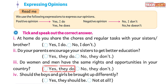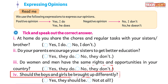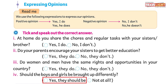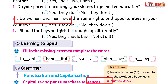The options for the third question are yes they do have and no they don't have — just choose the correct option. The last question: should girls and boys be brought up differently? The options are yes they should be and no they should not be. Choose the correct option for yourself.